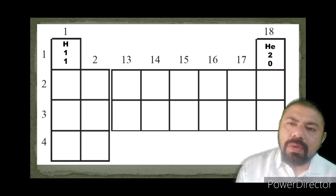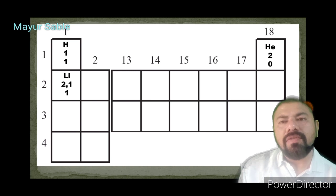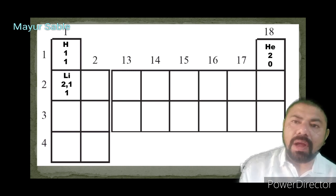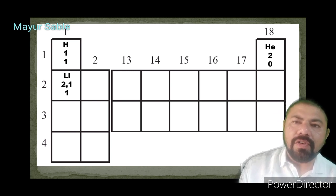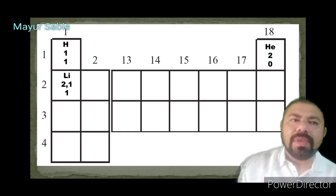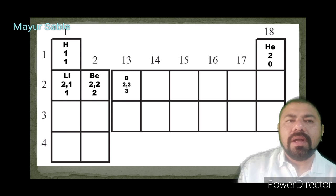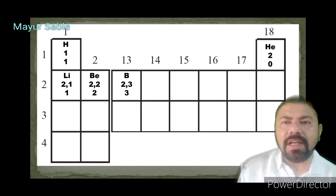Lithium has atomic number 3, electronic configuration 2,1. Its nearest inert gas is helium, so lithium will try to donate one electron — valency is 1. Beryllium has atomic number 4, electronic configuration 2,2 — it can donate 2 electrons, valency is 2. Boron has atomic number 5, electronic configuration 2,3 — it can donate 3 electrons, valency is 3.